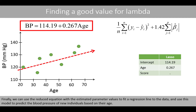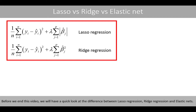If we set lambda to 1.42, the intercept will be estimated to about 114 and the parameter associated with age to 0.267. Due to shrinking the coefficients, LASSO regression has reduced the math score coefficient to zero, which means that we can remove the variable math score from the equation. Finally, we can use the reduced equation with estimated parameter values to fit a regression line to the data and use this model to predict the blood pressure of new individuals based on their age.